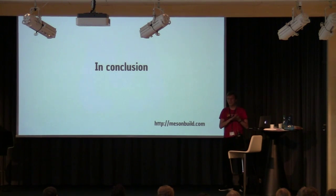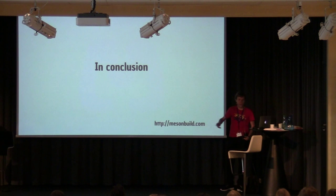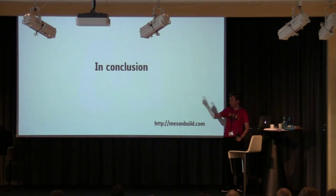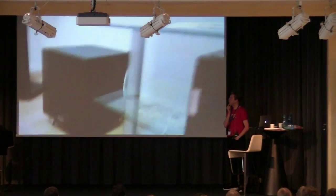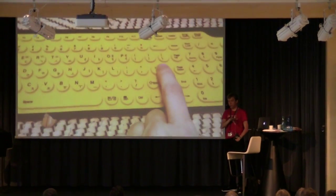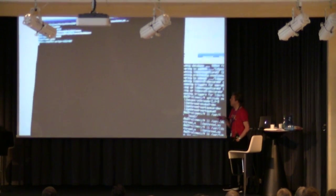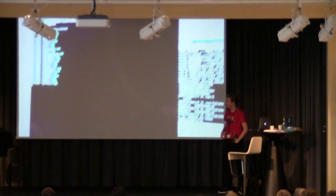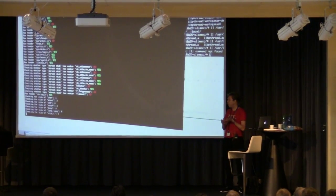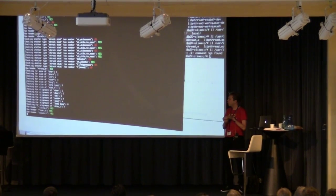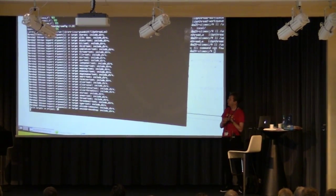A second video will be shown, doing roughly the same configuration process. The audience's job this time is to spot a reason why you might want to keep your current build system on your project - raise your hand when you spot it. What this video shows is configuring GLib - only the part related to GLib and not GIO. It starts checking for headers.